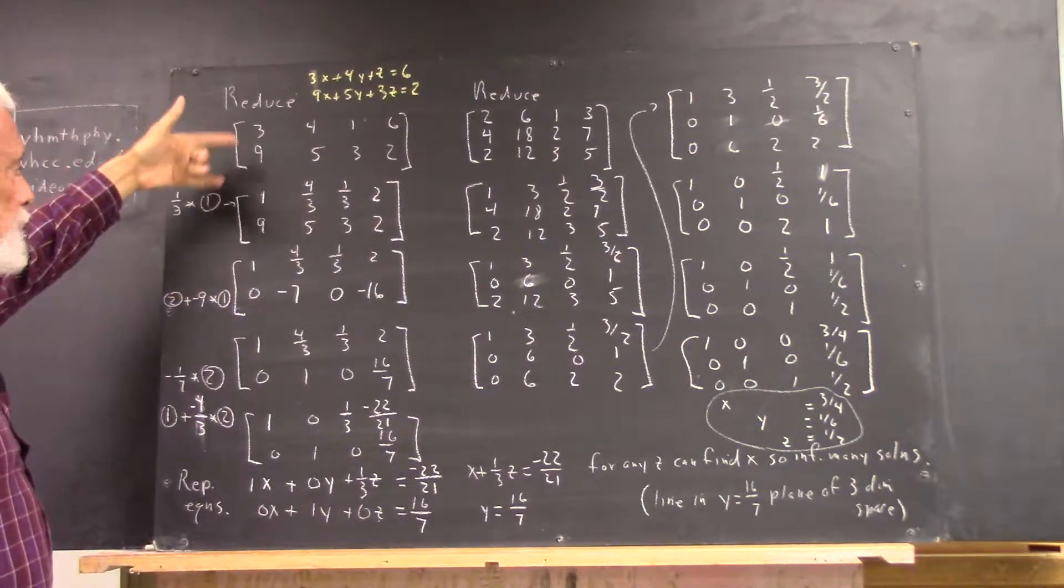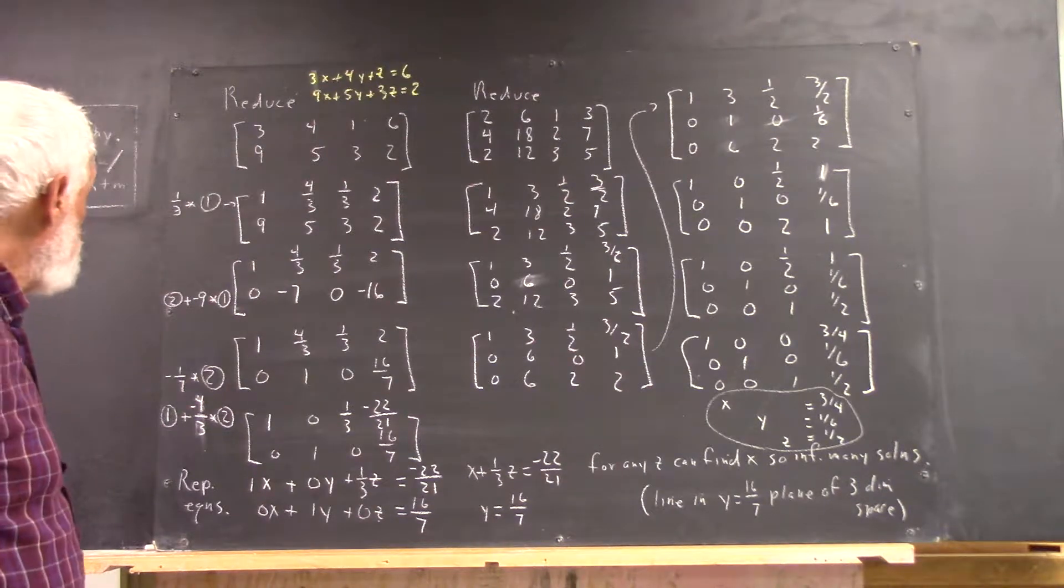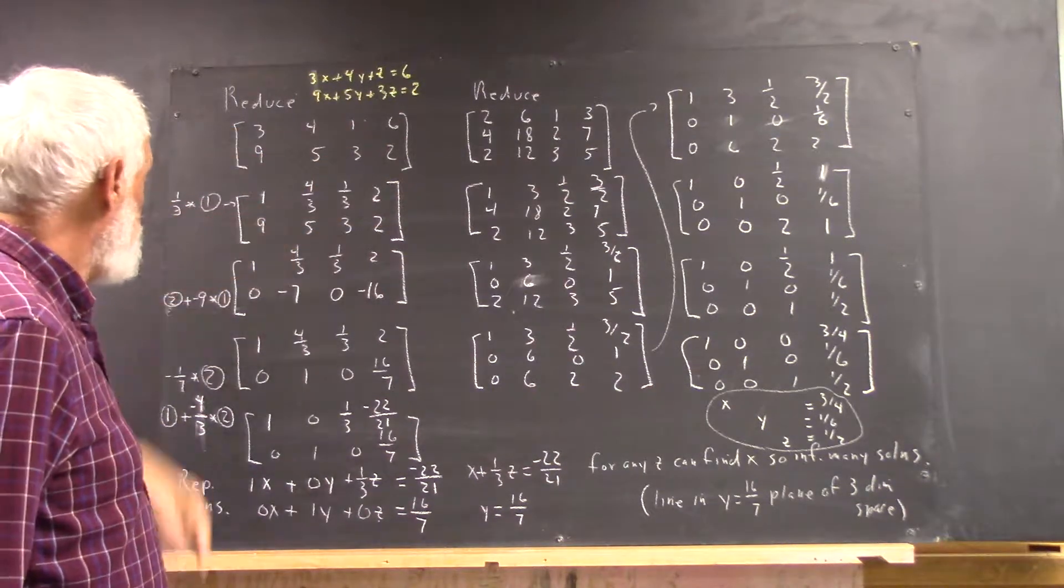So we have this. We follow the usual procedure. And we just take one-third of the first equation. We get this.